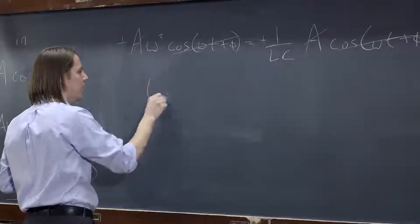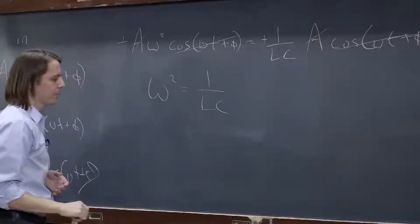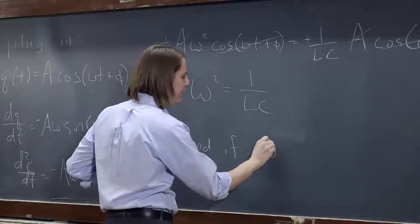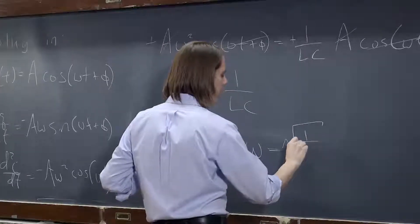And the equation says, sure, if omega squared equals 1 over LC. So that solution is good if the frequency of the function is the square root of 1 over LC.